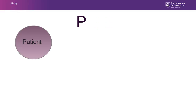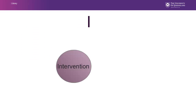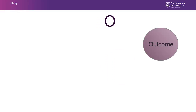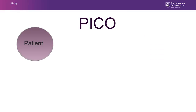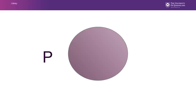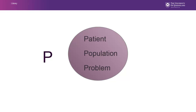PICO is an acronym for Patient, Intervention, Comparison, and Outcome. We use the PICO format to extract the information from a clinical situation to focus on a particular question. P describes the patient, population, or problem of interest.